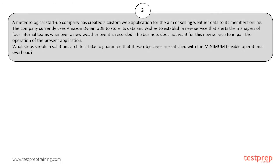Question number three: A meteorological startup company has created a custom web application for selling weather data to its members online. The company currently uses Amazon DynamoDB to store its data, and wishes to establish a new service that alerts the managers of four internal teams whenever a new weather event is recorded. The business does not want this new service to impair the operation of the present application. What steps should a solutions architect take to guarantee these objectives are satisfied with the minimum feasible operational overhead?